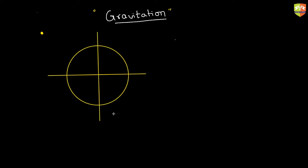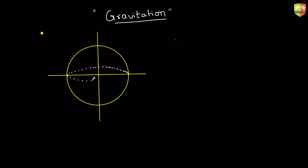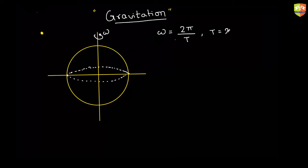This is the axis of rotation of the Earth, and the Earth is rotating with angular velocity omega. Can you tell me what is the angular velocity of the Earth's rotation? The time period of revolution of the Earth is 24 hours, so omega equals 2π divided by the time period T, where T is 24 hours times 60 minutes times 60 seconds. That is how you get the angular velocity of the Earth.